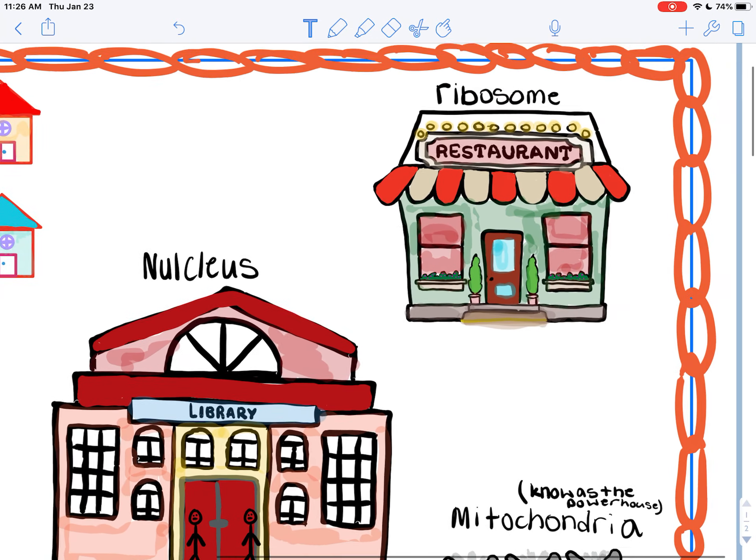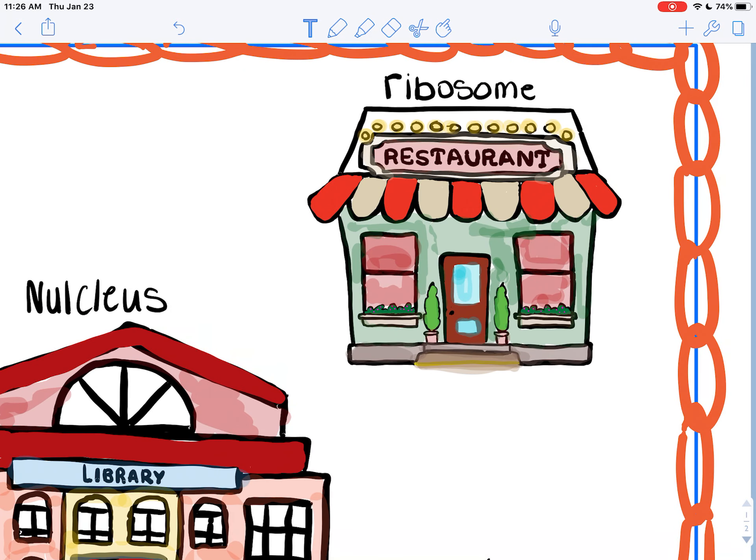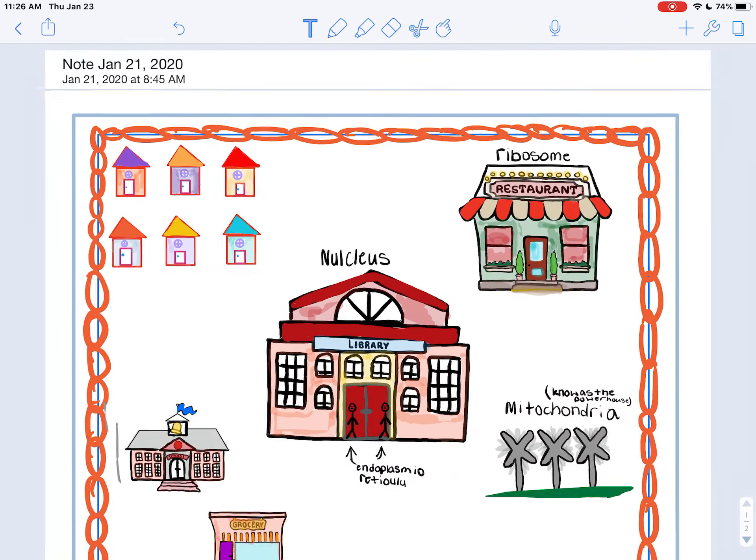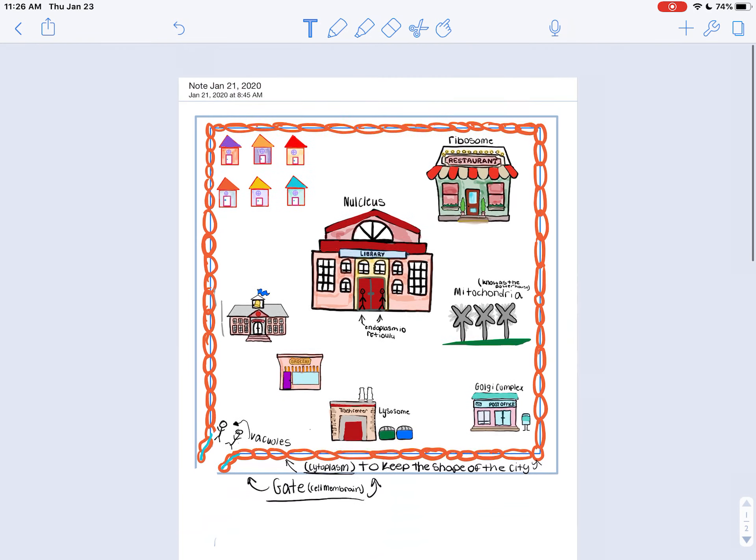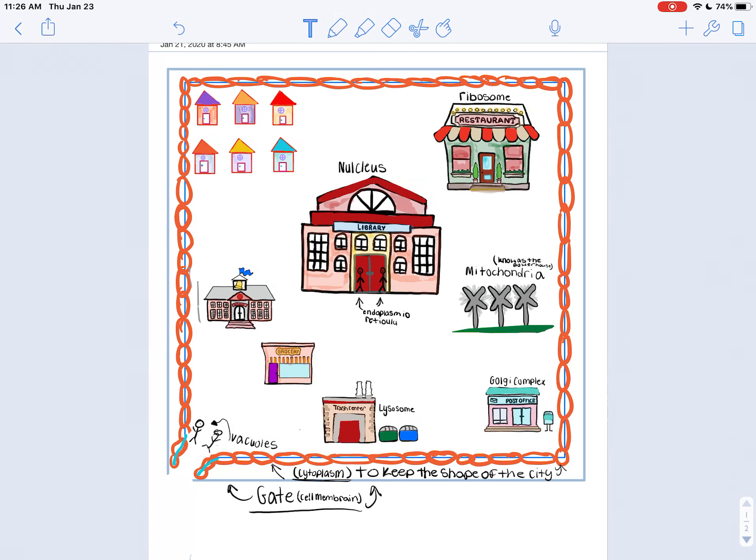Then we have the ribosome. I did a restaurant because it gives nutrients to the cell. And that is my animal cell functions. Thank you.